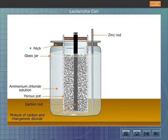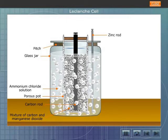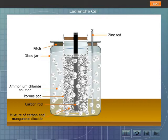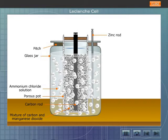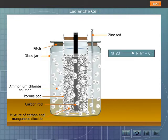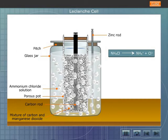Let us now look at the chemical reactions taking place inside the cell to understand how the electrodes get charged. Ammonium chloride, the electrolyte, splits into ammonium and chloride ions. The chloride ions move towards the zinc rod.